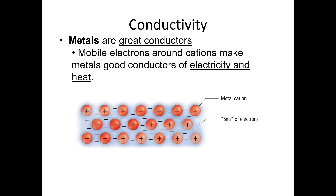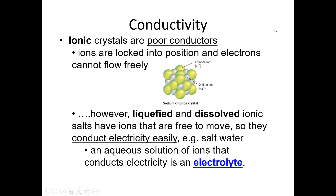Because of that sea of electrons, metals are great conductors of electricity. The reason is that those electrons are delocalized and mobile — since they can move around freely, they conduct electricity very well. Metals are also very good conductors of heat. For ionic crystals, it's a different story, because those electrons are locked into place and not delocalized. They can't move around, so ionic crystals are very poor conductors of electricity and heat.